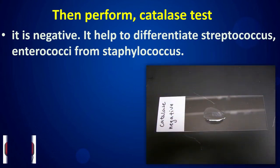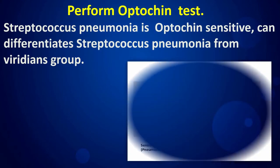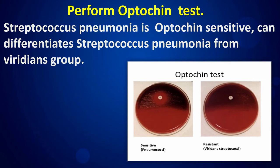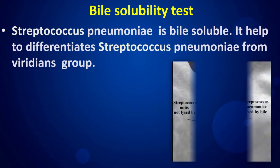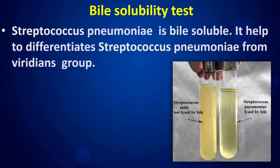Perform the optochin test: Streptococcus pneumoniae is optochin-sensitive, which differentiates it from the viridans group. The bile solubility test is also used — Streptococcus pneumoniae is bile-soluble, further helping to differentiate it from the viridans group.